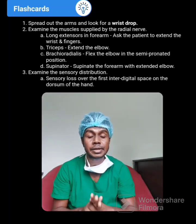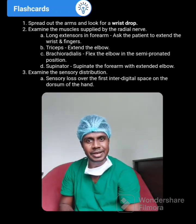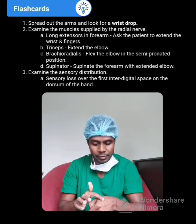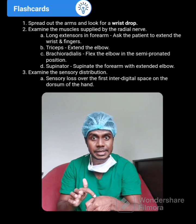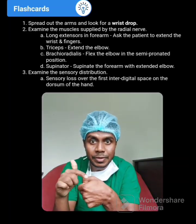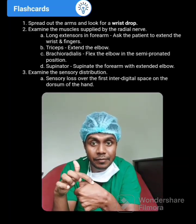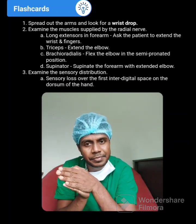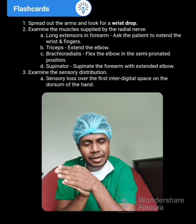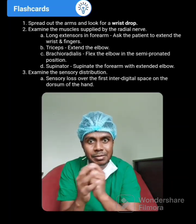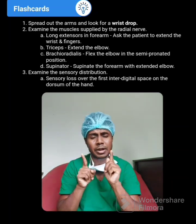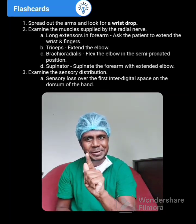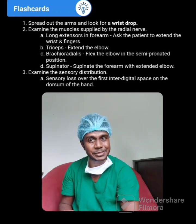Last, you have to check the skin supply of the radial nerve — check the sensory of the first web space, also called the first interdigital space. If there is a sensory loss in this area, it indicates radial nerve palsy. If your patient has those symptoms and signs, you can confirm your diagnosis: yes, there is a radial nerve palsy with wrist drop.